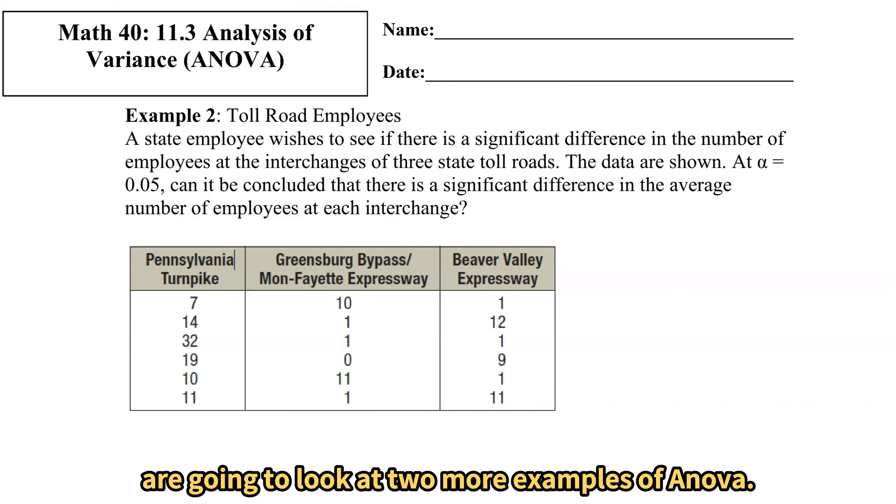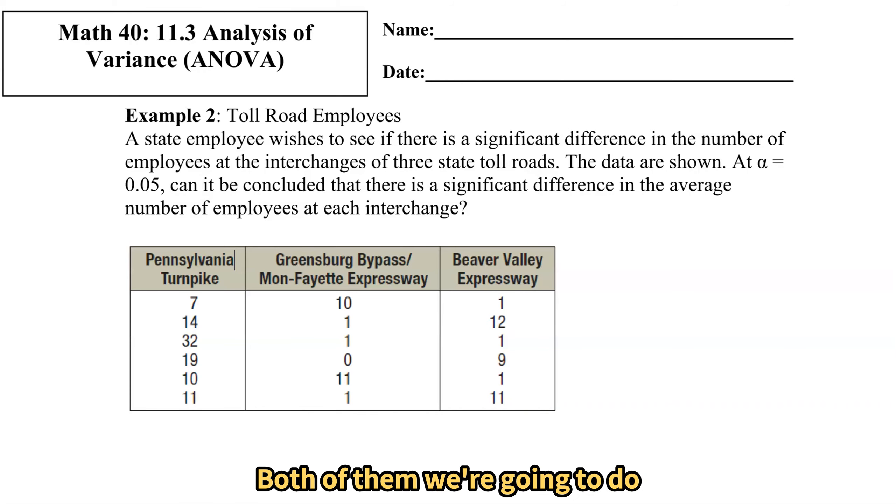In the next two lessons we're going to look at two more examples of ANOVA. Both of them we're going to do using Excel and Google in the same video. So this lesson we'll talk about these toll road employees and in the next one we'll do weights of poplar trees using both Excel and Google just to compare the two.